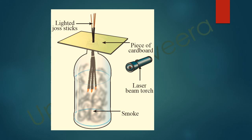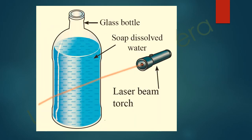To observe a light beam, you can light some joss sticks and produce smoke in a bottle, then direct light with a laser torch — you will see the light beam through the smoke. You can also fill a bottle with soapy dissolved water and direct a laser beam through it to observe a light beam.